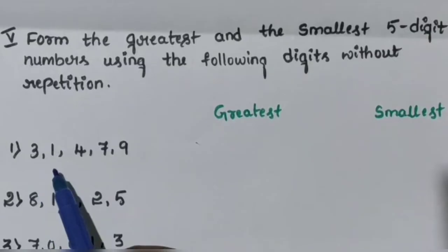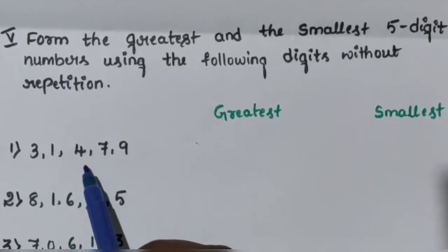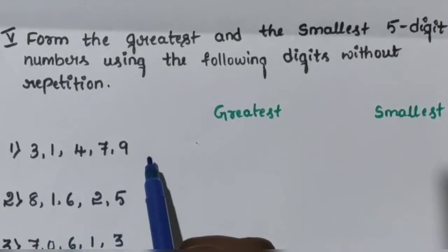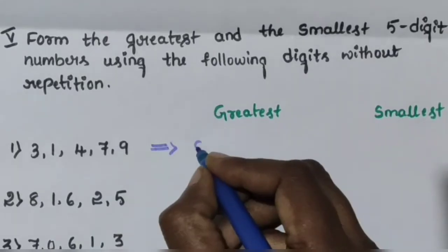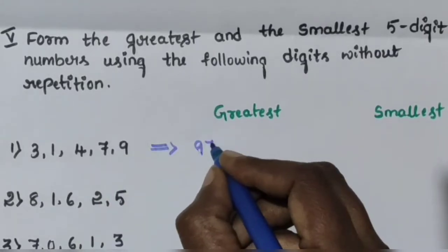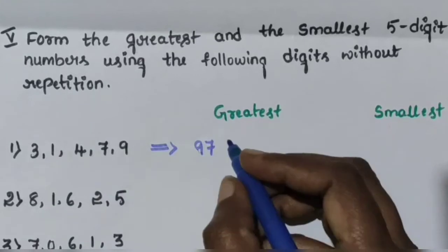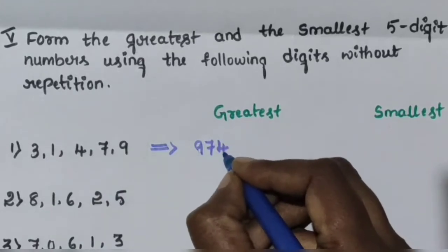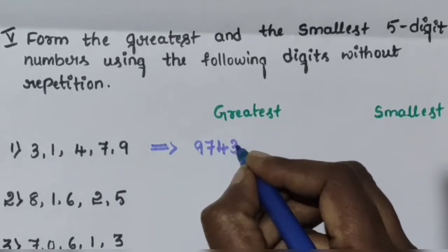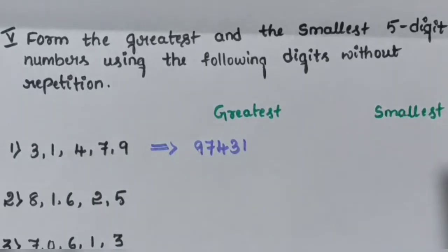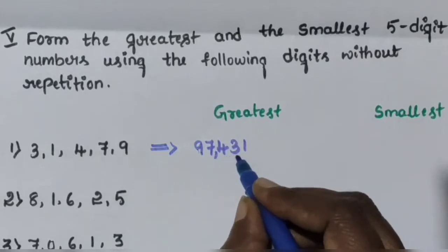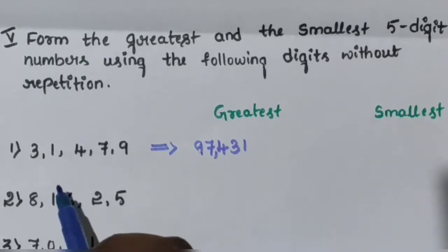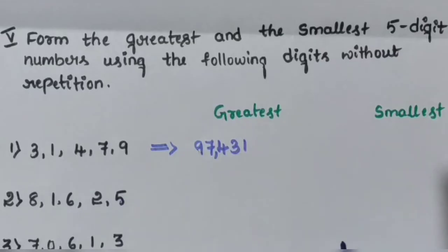So first one — digits are 3, 1, 4, 7, 9. Then write the greatest number by arranging in descending order: 9, 7, 4, 3, 1. So 97,431 is the greatest 5-digit number.